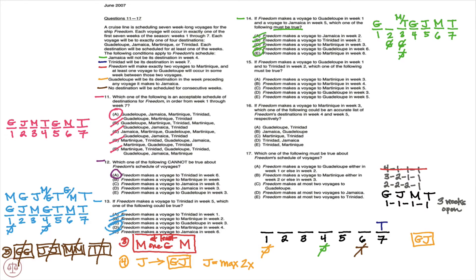Question 15. If Freedom makes a voyage to Guadalupe in week 1 and to Trinidad in week 2, which one of the following must be true? Well, first, notice that we can manipulate our previous work from question 14 rather quickly to satisfy the conditions set forth in the stem of question 15.